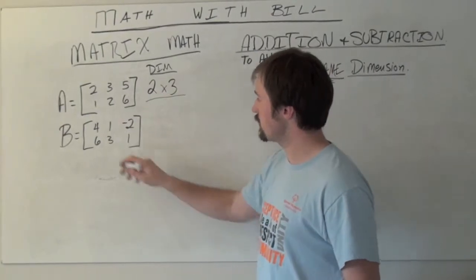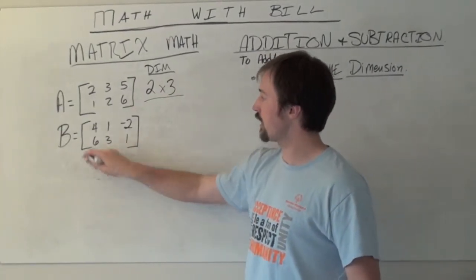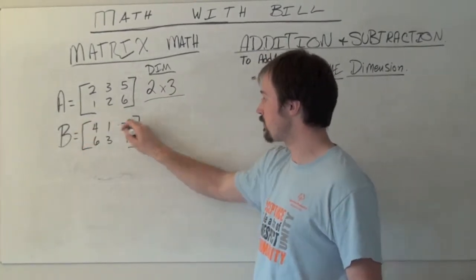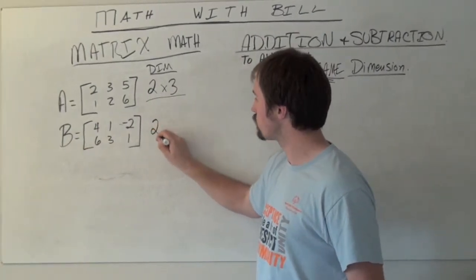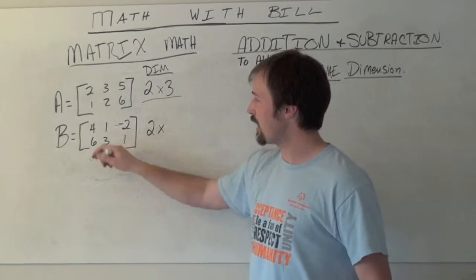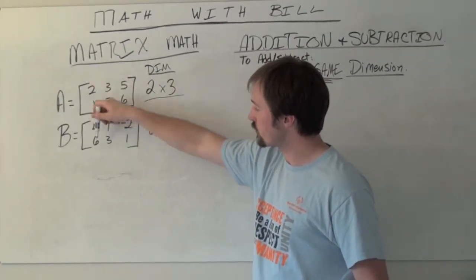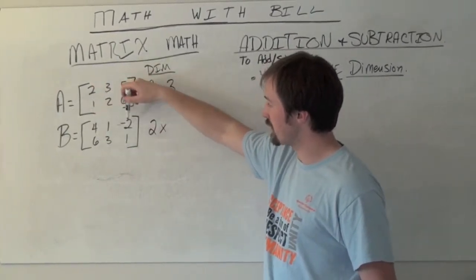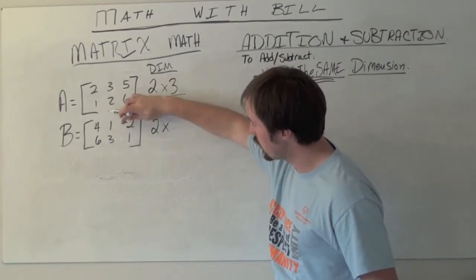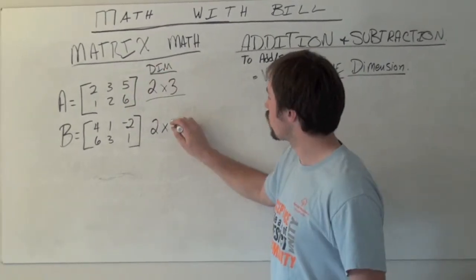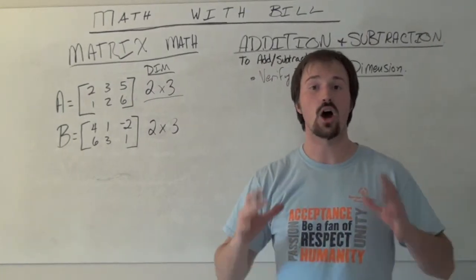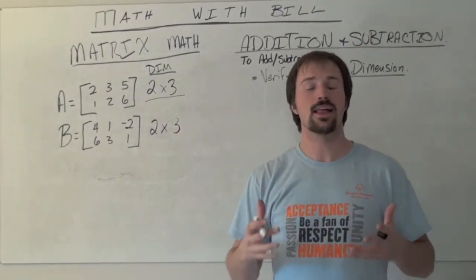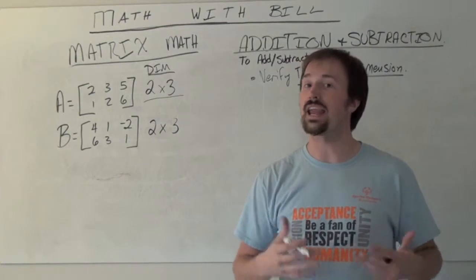For matrix B, we have two rows horizontally: the 4, 1, 2 row and the 6, 3, 1 row. We have the 4, 6; the 1, 3; and the negative 2, 1 columns, so this is also 2 by 3. Because our dimensions are exactly the same, we can go ahead and add or subtract.